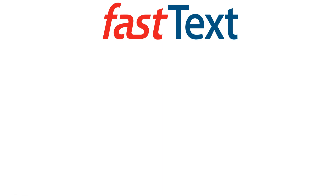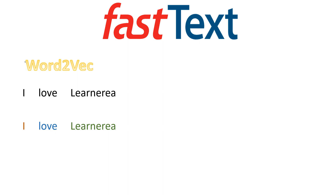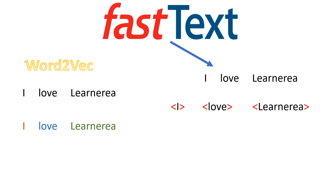Assuming you have seen those, let's move forward. In the Word2Vec model, it breaks the input by words — the smallest unit is a word. For example, if you supply the input 'I love Learnarea,' it will be broken down into individual words. In FastText, it also breaks sentences into words and includes them in angular brackets, but it also accepts another parameter called n-gram. You can supply a value of three, four, five, six, or whatever you want.